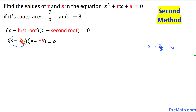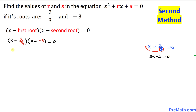Let me show you an easy way to remove this fraction. Let's focus on the denominator 3 and simply drag it to the front — so x minus 2/3 equal to 0 can be written as 3x minus 2 equal to 0. So thus we can write the first factor nicely as 3x minus 2.